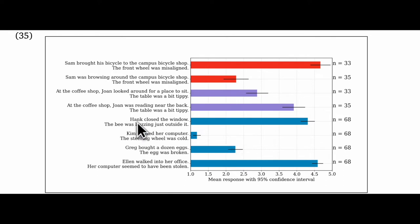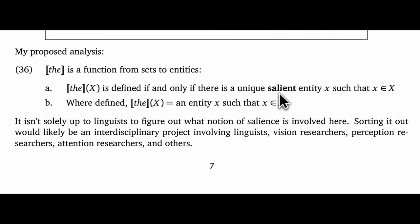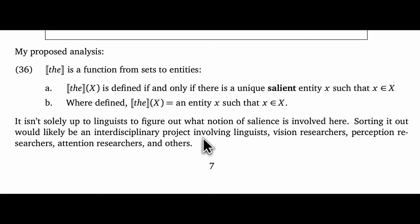But then what about 'Hank closed the window. The bee was buzzing outside'? There might be a lot of bees in Hank's area, but this sentence still got high ratings. So what should we do? In response, I propose a minor modification to Partee's theory, given in 36. It really differs from hers only in introducing a notion of salience. I haven't given a theory of salience, and it might in fact be hard to give such a theory, but I think that's fine. It isn't solely up to linguists to figure out what notion of salience is involved here — sorting that out would likely be an interdisciplinary project involving linguists, vision researchers, perception researchers, attention researchers, and maybe others.